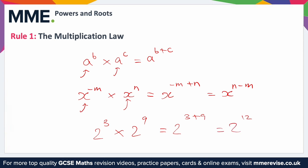If you had something like three to the power of four times five to the power of seven, the two base numbers — three and five — aren't the same. In this case we can't do anything. The base numbers need to be the same, like in the previous examples where they were both two, both a, or both x. If they're not the same, you can't apply the rule.